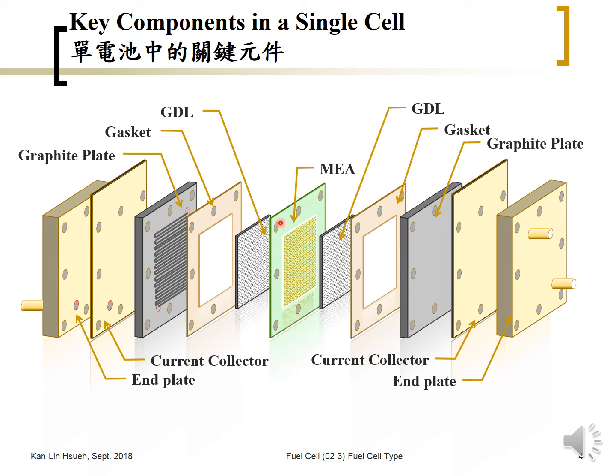The key components are: the MEA, the GDL — gas diffusion layer, the gasket, the graphite plate or channel plate or carbon plate, the current collector, and the end plate. Why we need a channel plate or graphite plate will be described in the next slide.